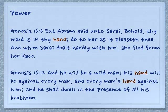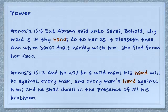In Genesis 16:6: 'But Abraham said unto Sarai, Behold, thy maid is in thy hand; do to her as it pleaseth thee. And when Sarai dealt hardly with her, she fled from her face' — talking about Hagar. Abraham said, you have the power over her; do whatever you want. And in Genesis 16:12: 'And he will be a wild man. His hand will be against every man, and every man's hand against him. And he shall dwell in the presence of all his brethren' — speaking of Ishmael, that he will force his power against everyone, and everyone will try and power back against him.